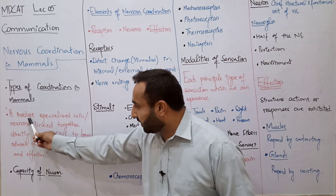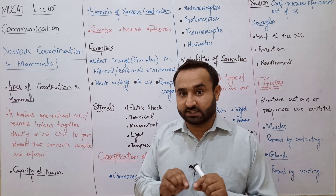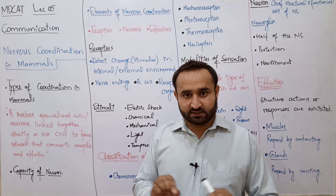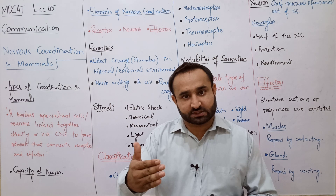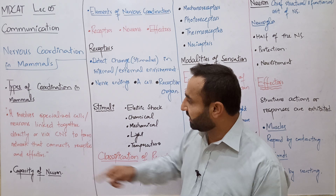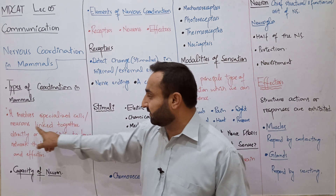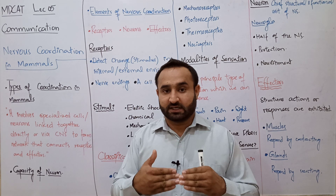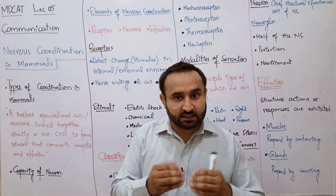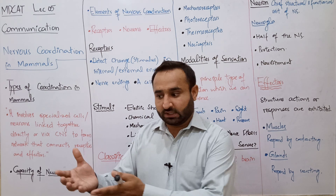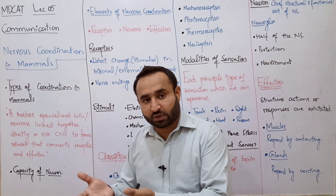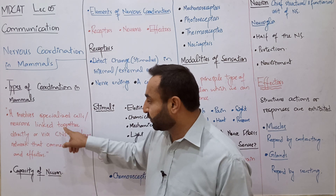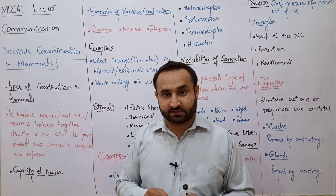Nervous coordination involves specialized cells — neurons — which are specialized cells for communication, coordination, and transport of messages. Neurons are linked together directly or via the central nervous system. In some animals without a CNS, sensory neurons are directly attached to motor neurons, with ganglia present. In humans, the centralized nervous system — brain and spinal cord — serves as the main processing unit.